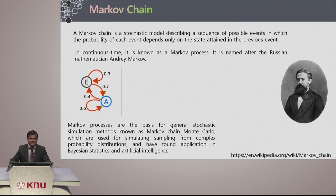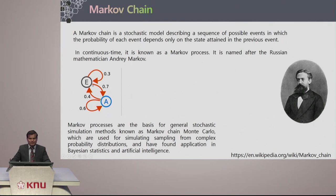As you can see here, a sample model is given with two states, E and A — consider them as England and America. People in England stay in England 30 percent and 70 percent move to America, whereas in America 40 percent move to England and 60 percent stay in America. That is a simple state transition happening here.